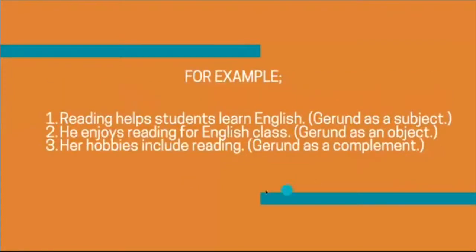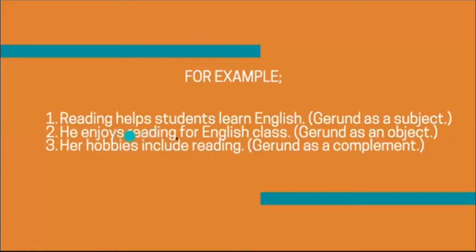For example, 'Reading helps students learn English.' The gerund here is the verb with -ing, but in this sentence, reading is not used as a verb — it is used as a noun, or as a subject. Next, number two: 'He enjoys reading for English class.' Enjoys is the verb here, and reading would be an object — but again, it's acting like a noun. It answers the question: what does he enjoy? He enjoys reading.